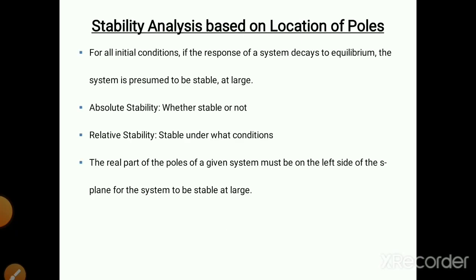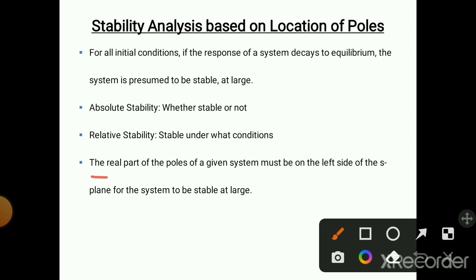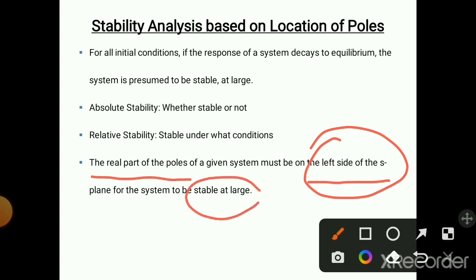Now, stability analysis is based on the location of the poles. For all initial conditions, if the response of the system decays to equilibrium, the system is presumed to be stable at large. Absolute stability is whether the system is stable or not; relative stability is about under what conditions the system is stable. The real part of the poles must be on the left side of the s-plane for the system to be stable at large.